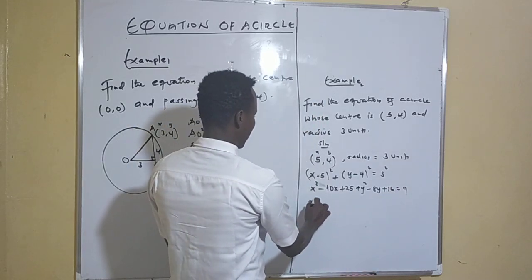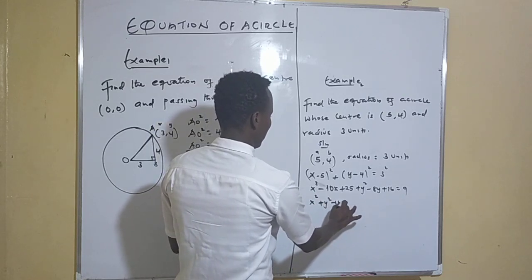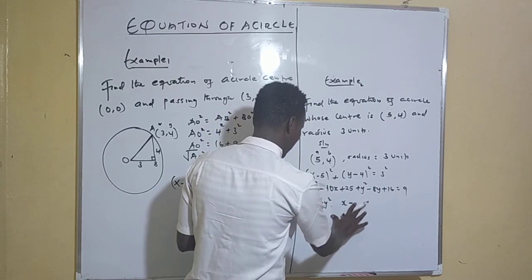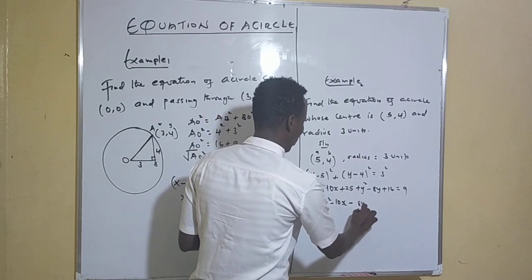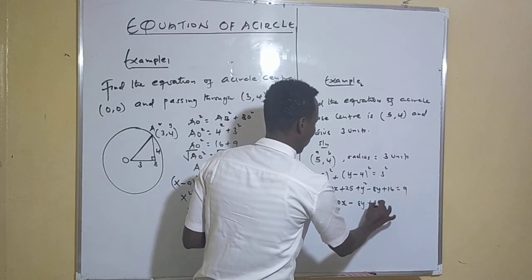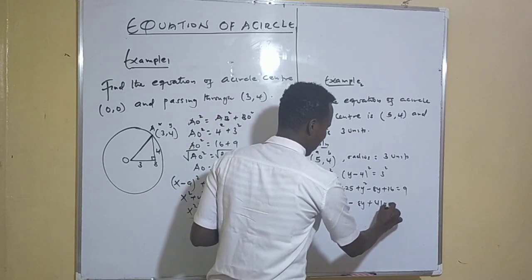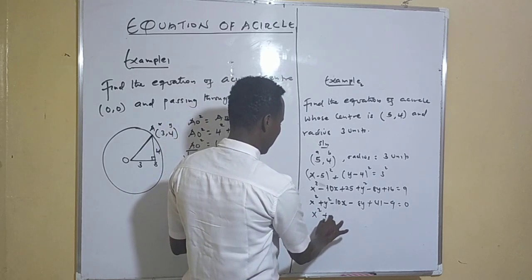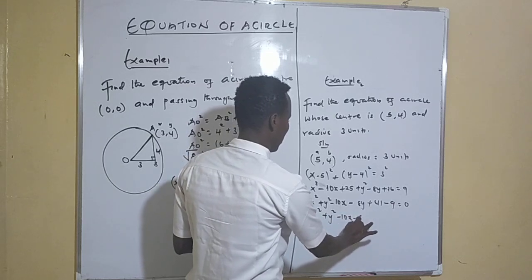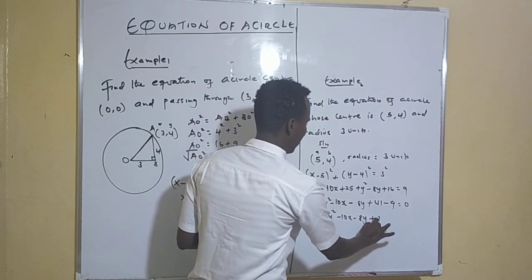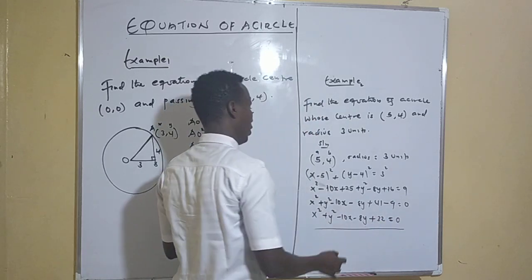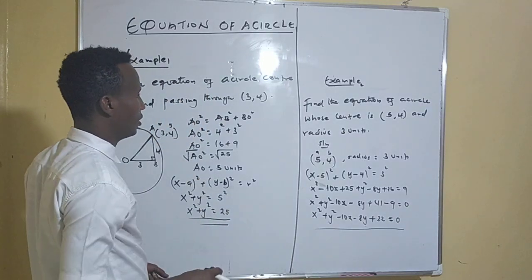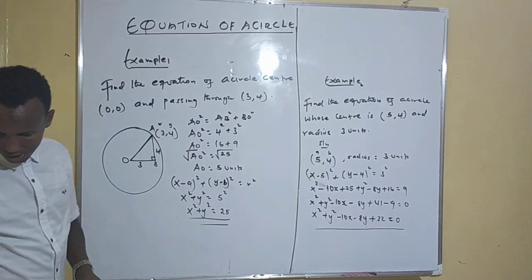Expanding y minus four squared gives y squared minus eight y plus sixteen, and this equals nine. Collecting terms: x squared plus y squared minus ten x minus eight y, and combining constants twenty-five plus sixteen minus nine equals thirty-two, so the final expanded answer is x squared plus y squared minus ten x minus eight y plus thirty-two equals zero.